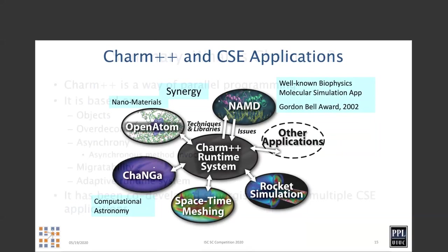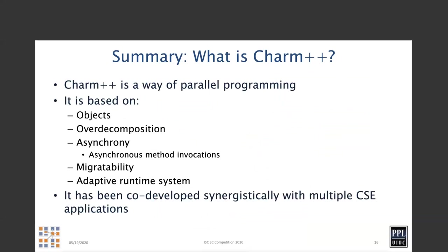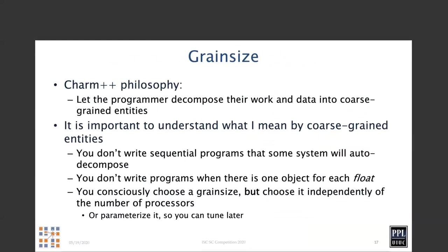This is not the exhaustive list of applications; there are many, many more. In summary, Charm++ is a parallel programming system based on objects, over-decomposition, asynchrony, and migratability. It has an adaptive runtime system and has been co-developed with multiple CSE applications. One issue comes up: if you're going to over-decompose, how much over-decomposition should you do?